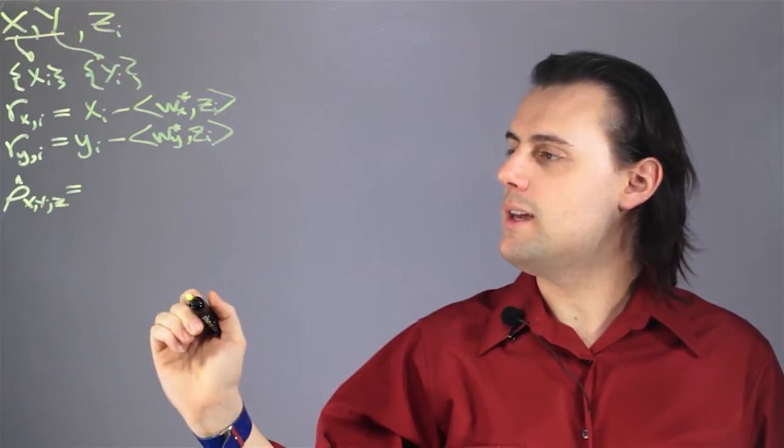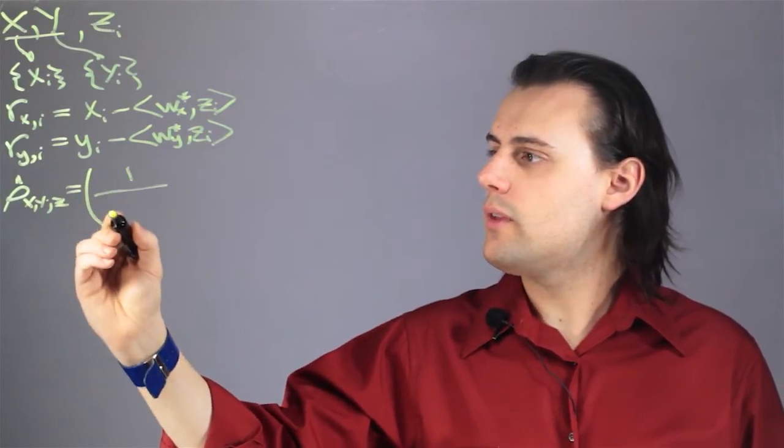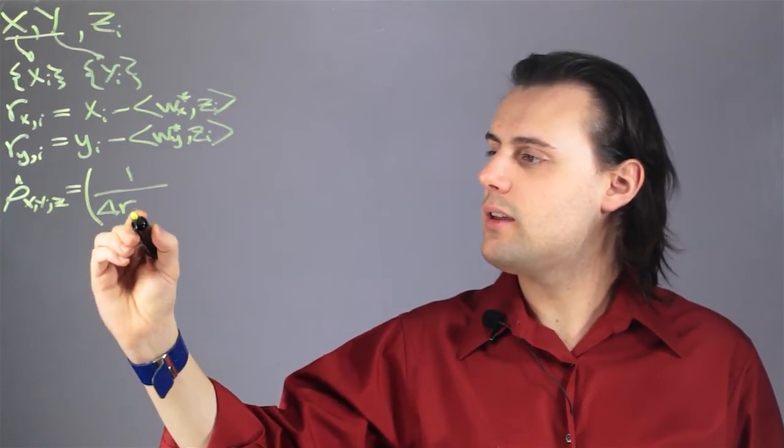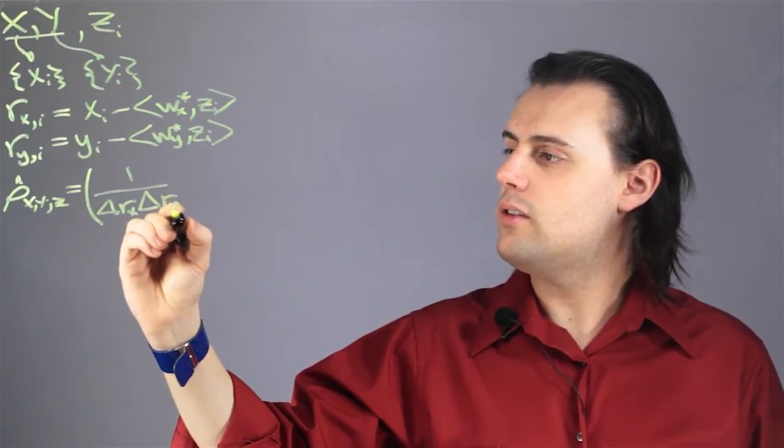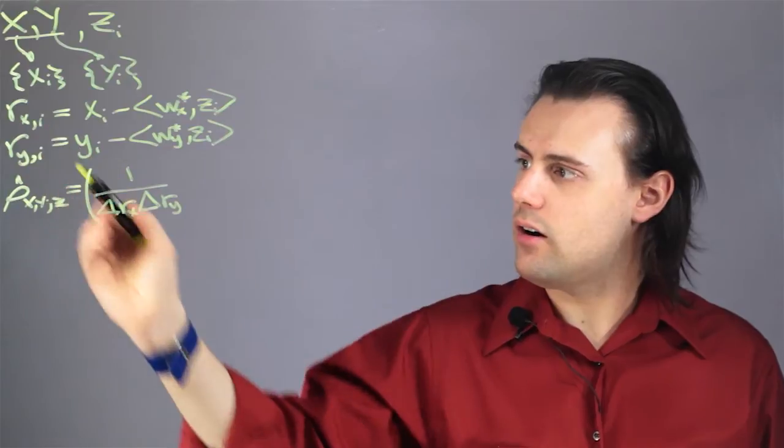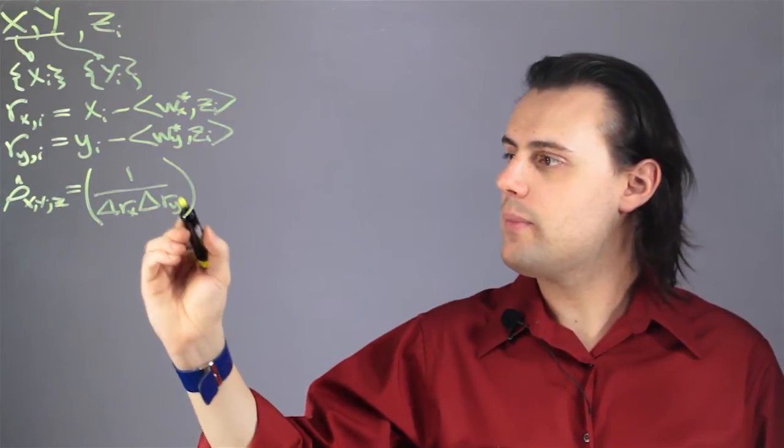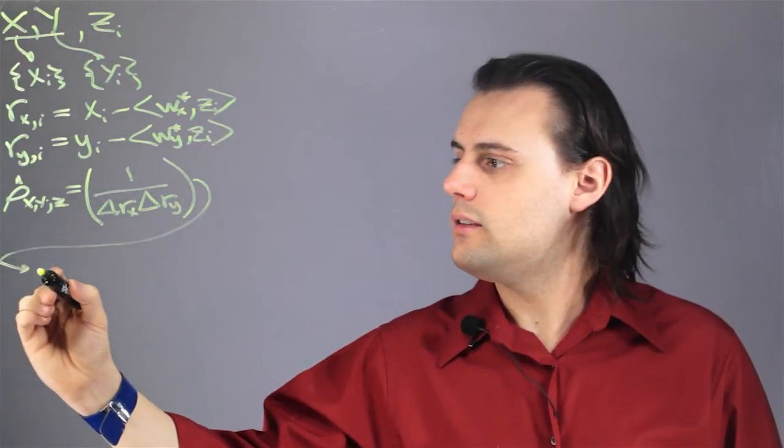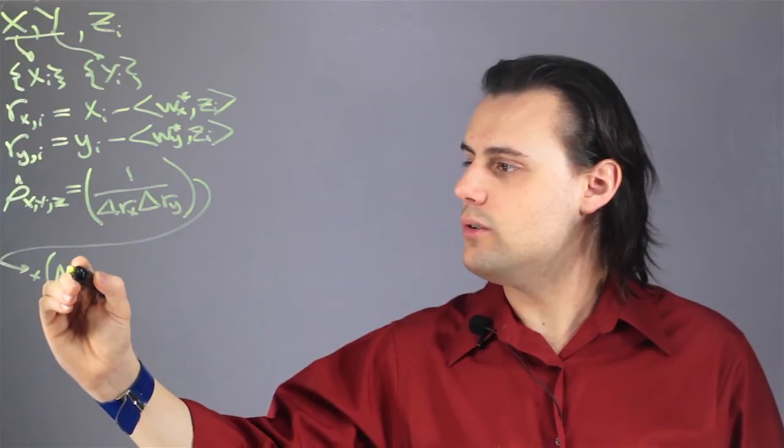The function will be equal to one over the uncertainties in the residuals. So the uncertainty in r sub x times the uncertainty in r sub y times the sum of the products of the residuals.